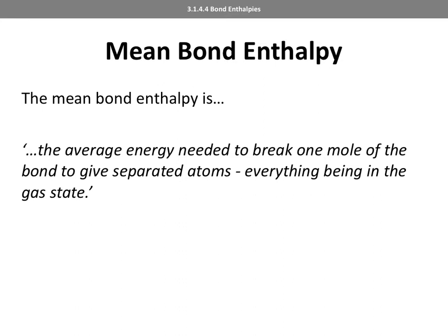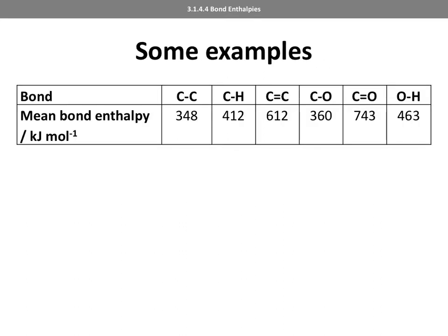We'll come back to that word 'mean' shortly — you can see it says average energy, but we'll understand a little bit better about why we're talking about average energy in a couple of slides. Here are some examples: notice again, just like all of the other enthalpies we've been doing, the units are kilojoules per mole. One way of looking at this is that the higher or greater the mean bond enthalpy, the stronger the bond.